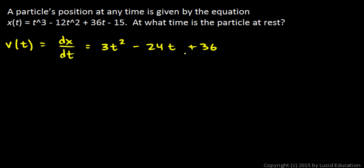That's the velocity, and we want to know when that equals 0, so set it equal to 0 and solve for t. This is fairly easy to solve because it will factor.